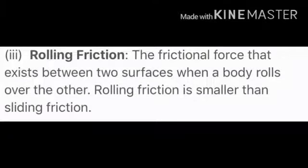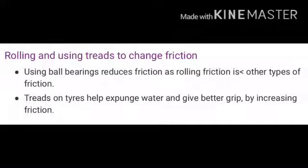Rolling friction is the force of friction existing between two surfaces in contact when one of them is rolling over the other. For example, the resistance to the motion of a ball rolling on a floor is an example of rolling friction. Wheels make the movement of luggage easy because they reduce friction. Rolling friction is much smaller than sliding friction; that is why all vehicles are mounted on wheels. Ball bearings are used in all machines where rotatory motion is required — in a ball bearing the axle rotates on the balls without sliding.